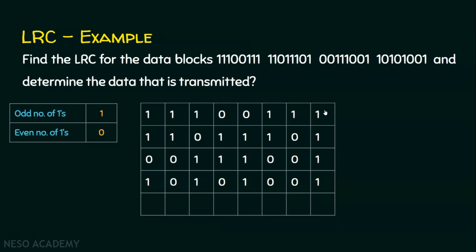How to calculate the parity bits? The parity bit is calculated for every column. Recall this rule: when we have an odd number of 1s, we use 1 as the parity bit; when we have an even number of 1s, we use 0 as the parity bit. In the first column, we have four 1s — that is an even number — so we use 0 here.